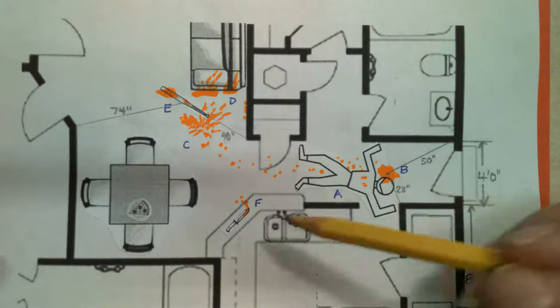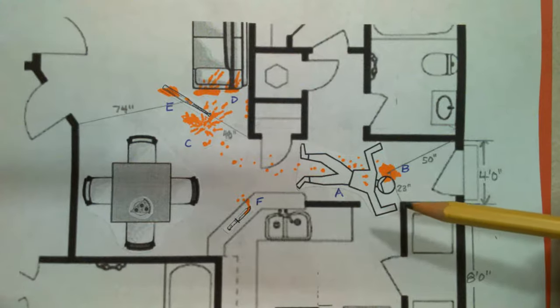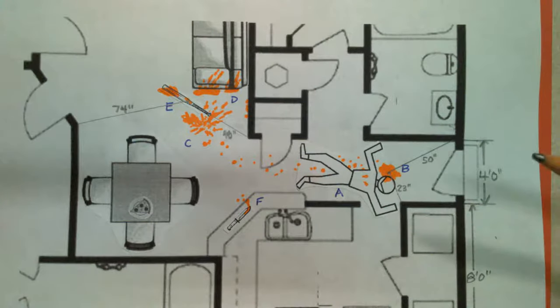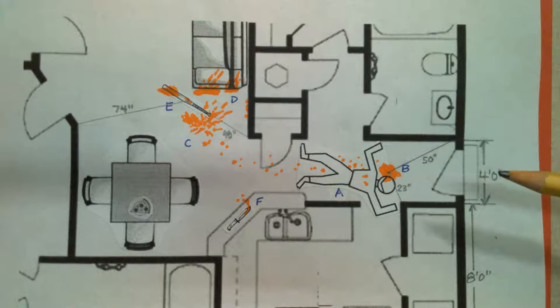Again, your measurements are going to be at all sorts of weird angles. That's what we expect to see. Nothing should be 90 degrees to a wall because that's just not how we do it.